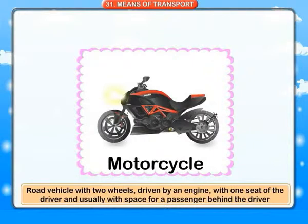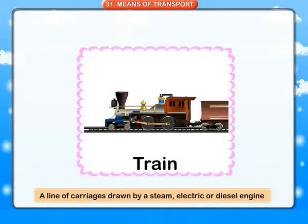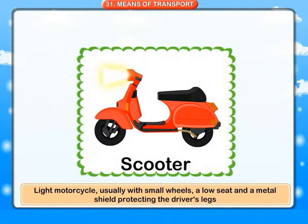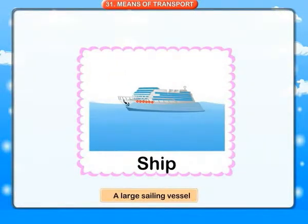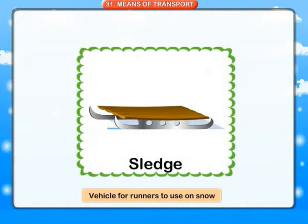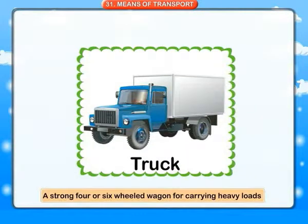Motorcycle: a road vehicle with two wheels driven by an engine, with one seat for the driver and usually space for a passenger. Scooter: a light motorcycle, usually with small wheels, a low seat and a metal shield protecting the driver's legs. Ship: a large sailing vessel. Sledge: a vehicle with runners for use on snow. Tonga: a light two-wheeled vehicle driven by a horse, used in India. Truck: a strong four or six-wheeled wagon for carrying heavy loads. Train: a line of carriages drawn by a steam, electric or diesel engine.